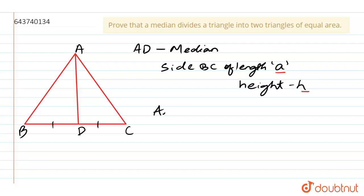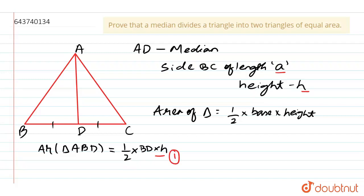We know the area of triangle is half into base into height. So let us take the area of triangle ABD. So the area would be half into base is BD and height is H. So let us take this equation as equation number one.